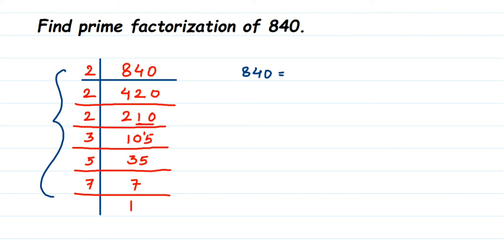So 840 can be written as, I'm going to just rewrite all the factors I got, it's 2 into 2 into 2 into 3 into 5 into 7. So this is how we have to do the prime factorization of any number.